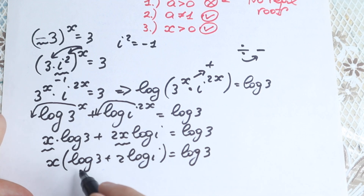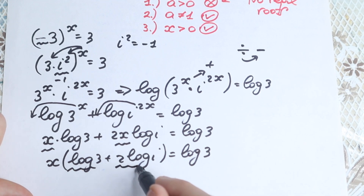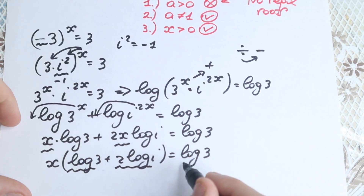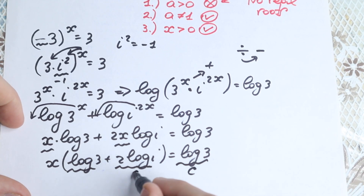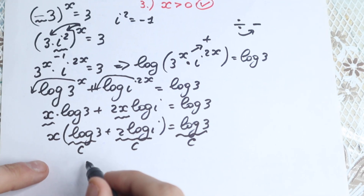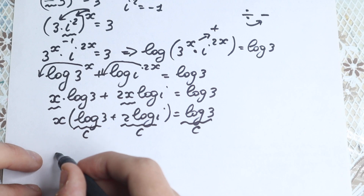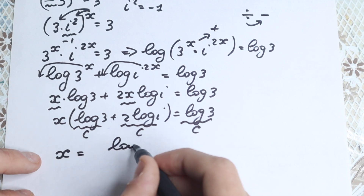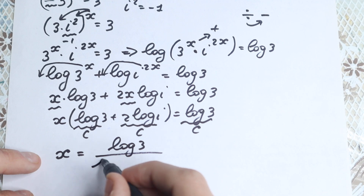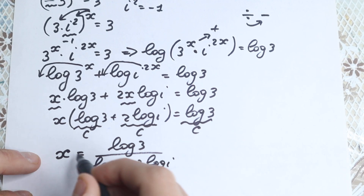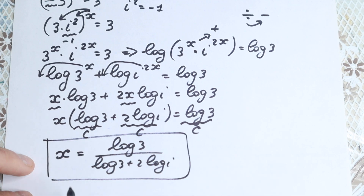Everything in parentheses is a constant — log 3 is a constant, and log(i) is an imaginary constant, but still a constant. So dividing both sides by (log 3 + 2·log(i)), we get x equals log 3 over (log 3 + 2·log(i)). This is our solution, in the context of complex numbers.